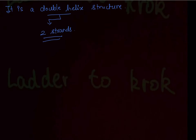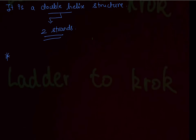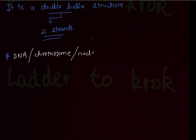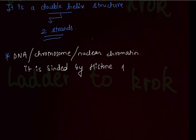The next point you should know regarding DNA is that DNA — or sometimes given as chromosome or nuclear chromatin in a question — is bound by histone proteins. This is a very important exam point: instead of DNA, they can give you chromosome or nuclear chromatin and ask who binds them. The answer is histone proteins.